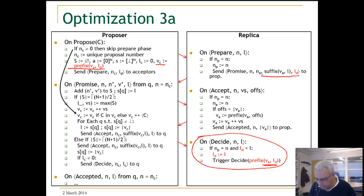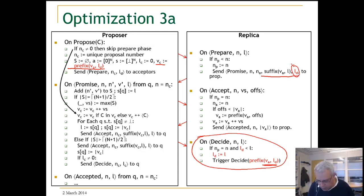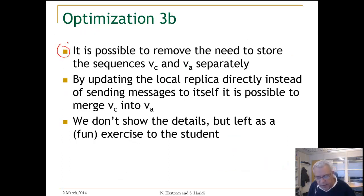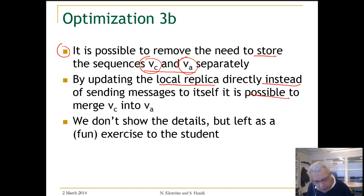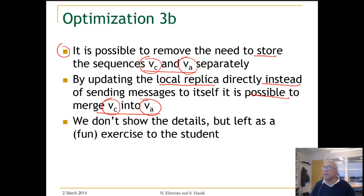Whenever we want to send VD, we send the suffix of VA and LD. Whenever we want to decide on VD as a sequence, we decide on the prefix of VA up to LD. It is also possible to remove the need to store the sequence at the proposer and the accepted sequence separately, by updating the local replica at the proposer directly — merging the current sequence at the proposer with the accepted sequence. This is left as an exercise for students.